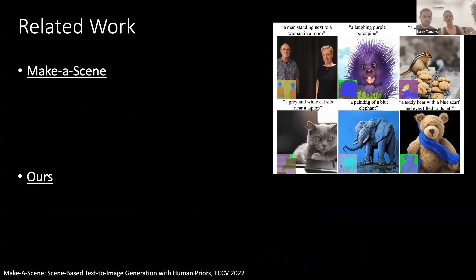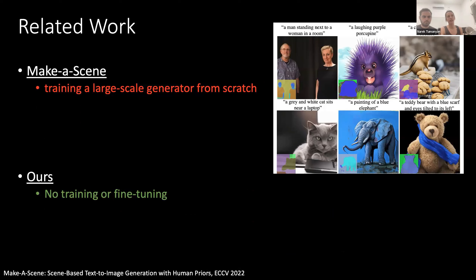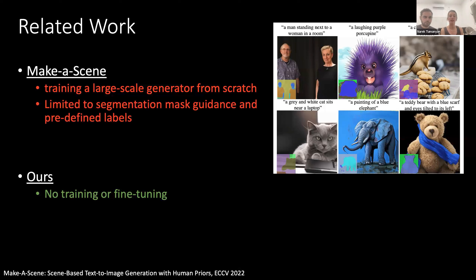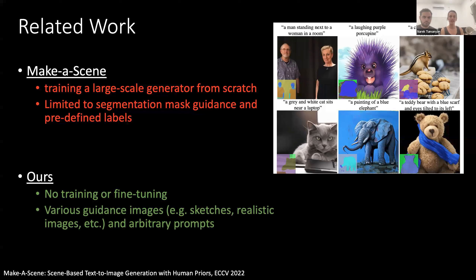Another approach for controlling generation is taken by Make-a-Scene, which is not a diffusion model but is relevant in the context of controlled generation. It involves training a large-scale generator from scratch to accept another input channel, using segmentation masks to specify the desired layout. The pitfalls of large-scale training are well known: it requires a lot of data and compute, not everyone has this especially in academia, and you're limited to the guidance domain the model was trained on. Our method can use various guidance images — sketches, realistic images — and arbitrary prompts.